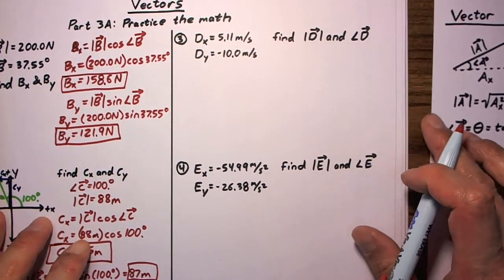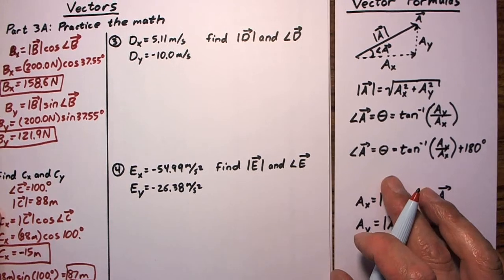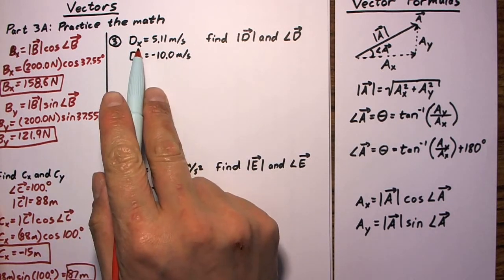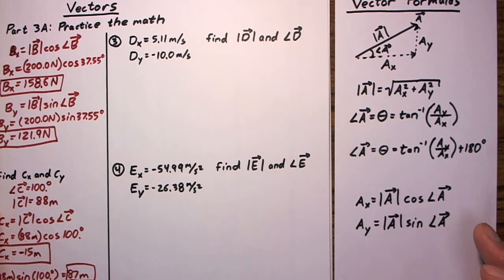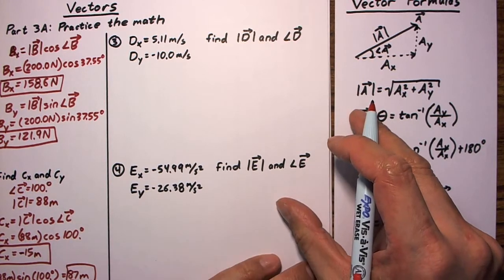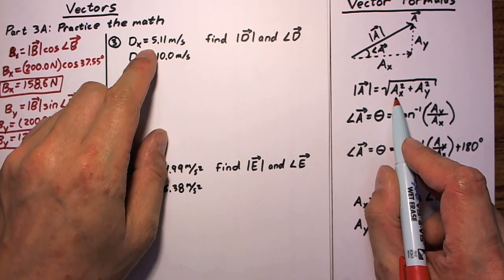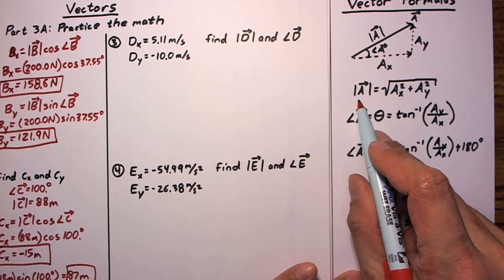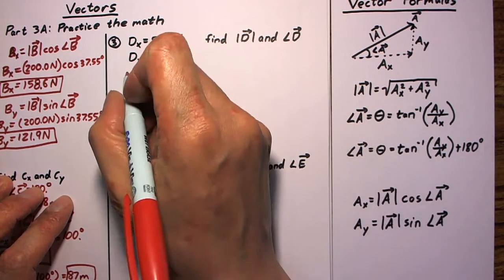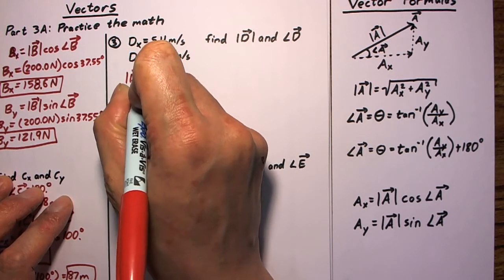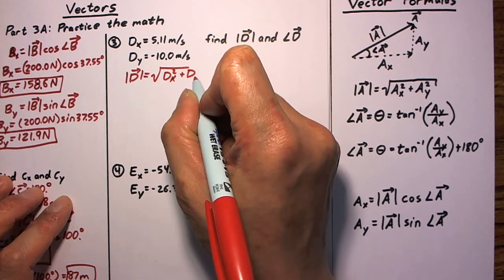The last two problems gave us magnitude and direction and asked us to find components. Now we get the opposite — we're given components and asked to find magnitude and direction. These are our two components. To find the magnitude, we use the formula: the magnitude of D equals the square root of DX squared plus DY squared. Plugging in our numbers: that's the square root of 5.11 meters per second squared plus negative 10.0 meters per second squared.